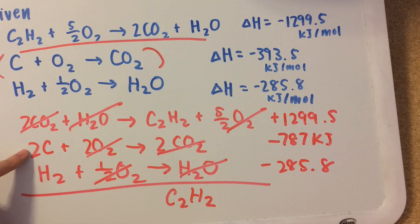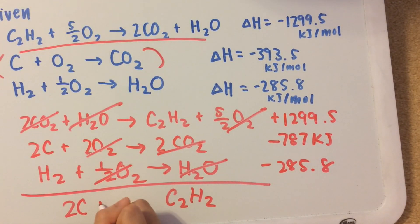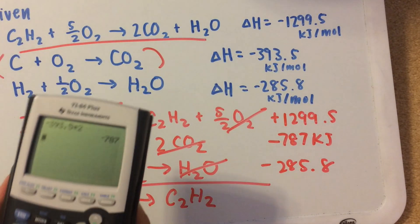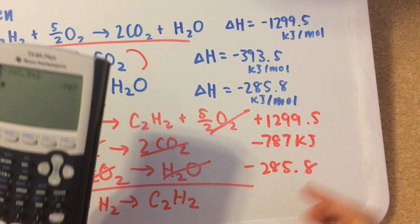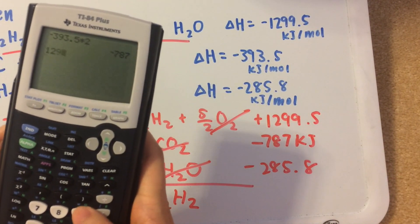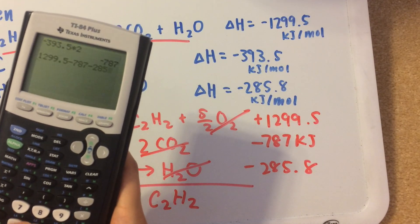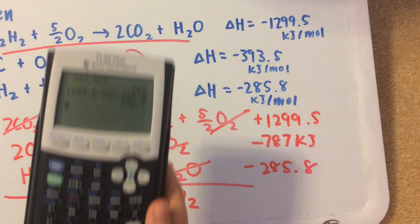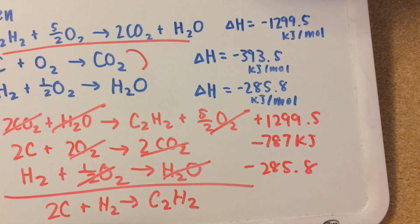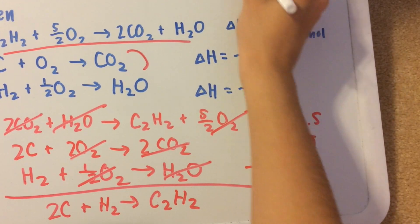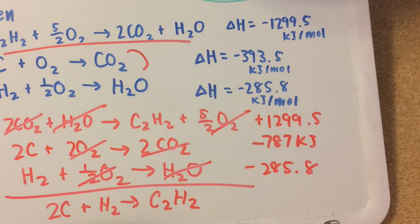And now we're left with 2C plus H2 yields C2H2, just like we needed over here. So that's a sure sign that we're on the right track. Now all we have to do is add up these enthalpies. So 1299.5 minus 787 minus 285.8, which gives us 226.7 kilojoules per mole. And that should be the answer.